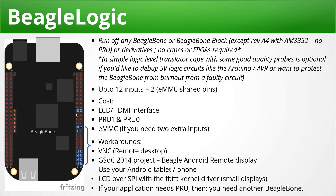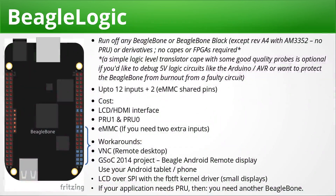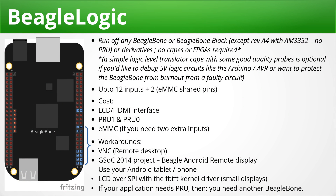The resources BeagleLogic uses are the LCD and HDMI interface pins remapped to the programmable real-time units, the PRUs themselves, and internal memory if you need two extra inputs. Workarounds for the display include remote desktop, the Google Summer of Code BeagleBoard Android remote display project — which lets you use any Android tablet or phone as a display via USB — and an LCD over SPI using the FBTFT kernel driver for small images or messages. If your application also needs the PRUs, you'd run BeagleLogic on a separate BeagleBone Black or BeagleBone.